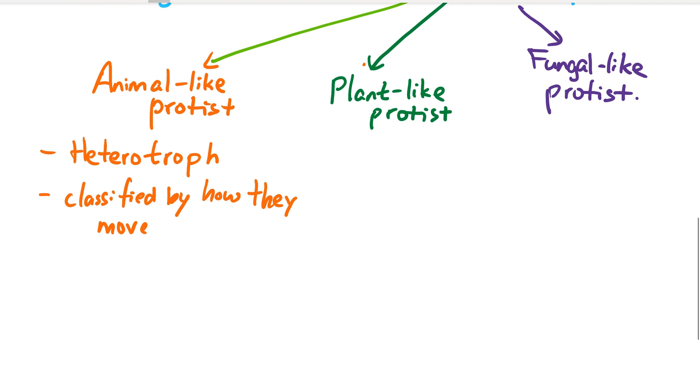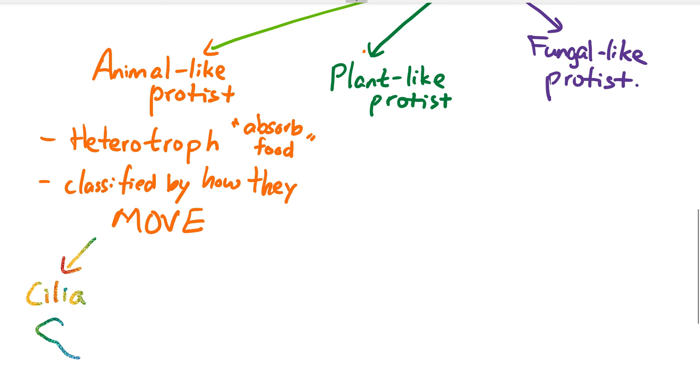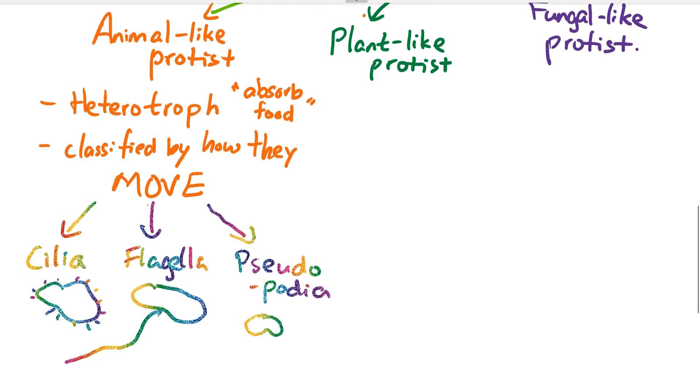They can move using cilia, tiny hair structures on the cell surface. The second method is flagella, a long whip-like structure. The third is pseudopodia, an extension of the cytoplasm. If I draw cells like this, they can push the cell's boundary to the right and eventually make that part longer to move forward. This extension is called a pseudopod or pseudopodia—pseudo means fake, pod means feet.